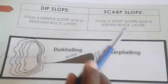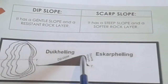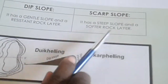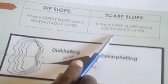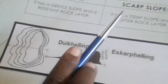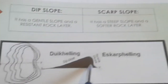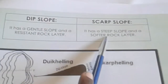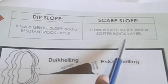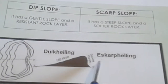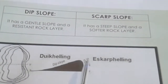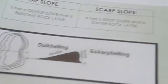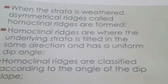The scarp slope is the steeper slope and it occurs where we have a softer rock layer. On softer rock, more erosion takes place, which creates a steep slope. So the two characteristics of inclined strata are the dip slope and the scarp slope.